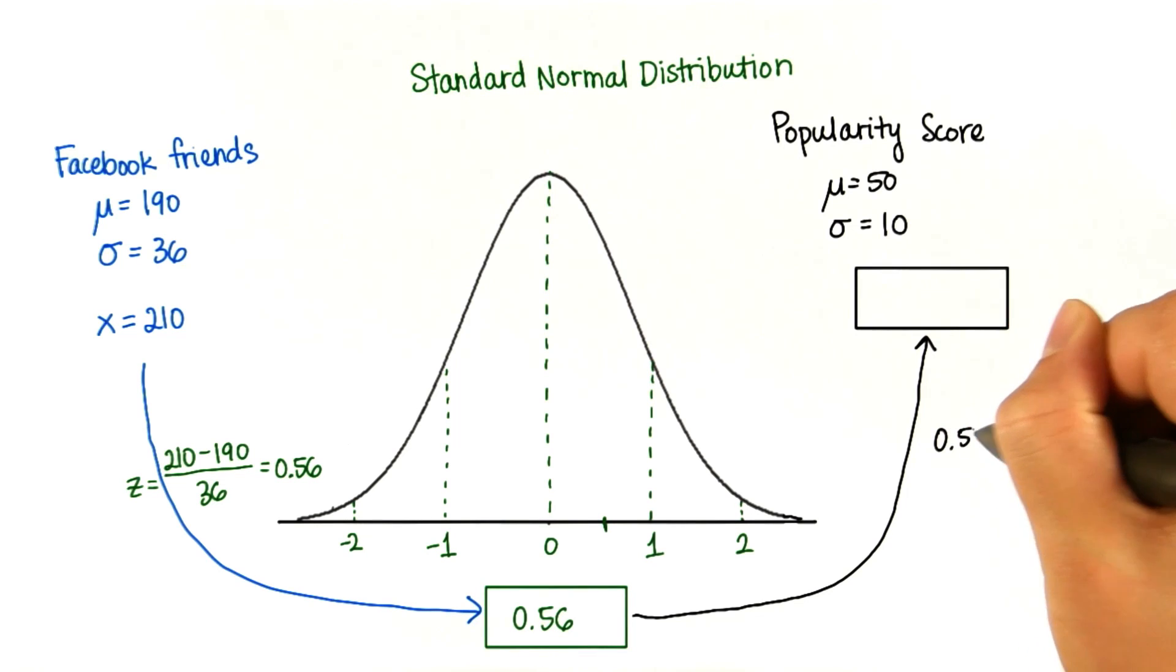We have that the z-score is 0.56, and we want to find out what value corresponds to this in a normal distribution with a mean of 50 and a standard deviation of 10. So here we have our setup.